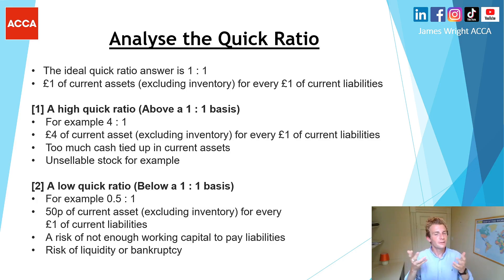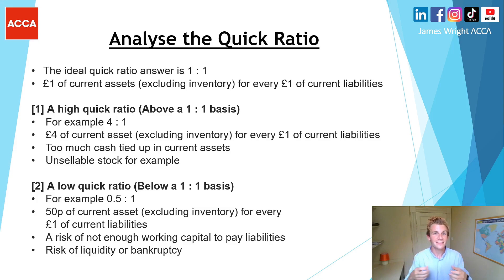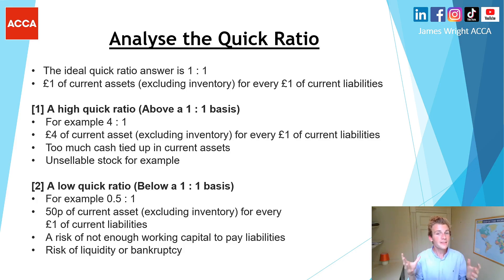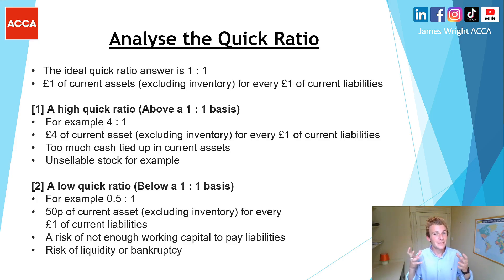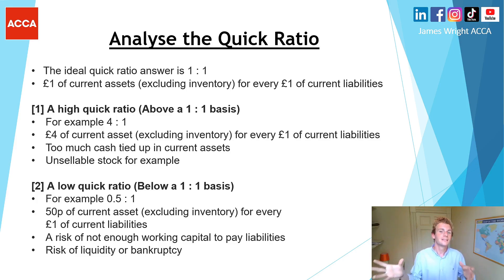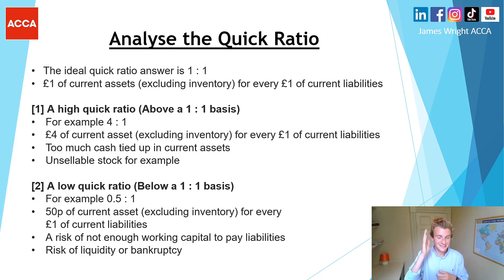If your quick ratio is higher than one — say four to one — this means four pounds of current assets excluding inventory for every one pound of current liabilities. This could imply too much cash tied up in current assets, possibly relating to unsellable stock. This is why we deduct inventory: if it's sitting on the balance sheet, why hasn't it been sold? The balance sheet gives us a snapshot at a particular point in time, so idle inventory distorts the picture of cash flow management.